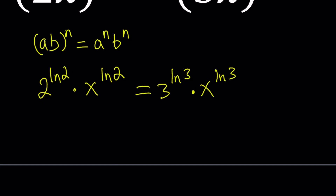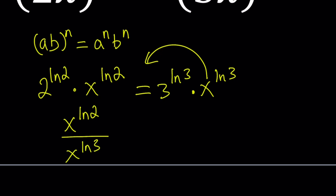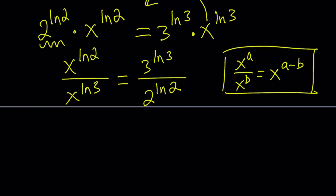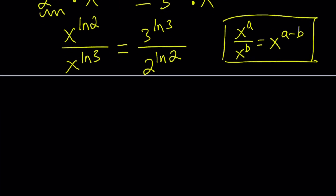Let's see how we can simplify this. Now the x's are separated, so we can bring them together. Let's divide by x to the power ln3, so we get x to the power ln2 divided by x to the power ln3. And then let's divide both sides by 2 to the power ln2, giving us 3 to the power ln3 divided by 2 to the power ln2. This way we separate the x's from the numbers, and now we have the same base. When dividing powers with the same base, you subtract the exponents. So the left-hand side becomes x to the power ln2 minus ln3.